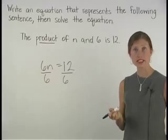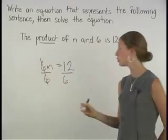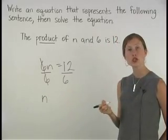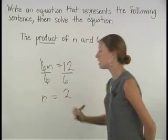On the left side of the equation, notice that the 6 and 6 cancel each other out, so we're just left with the n. And on the right side, 12 divided by 6 is 2. So we have n equals 2.